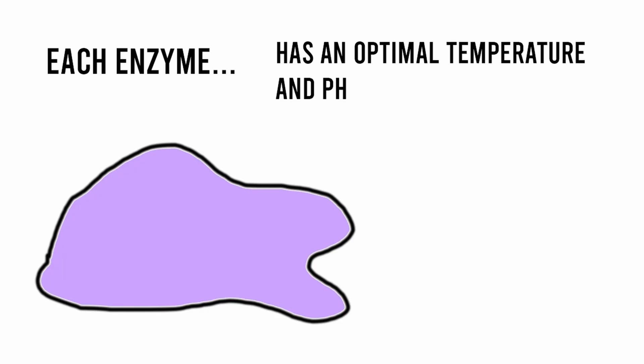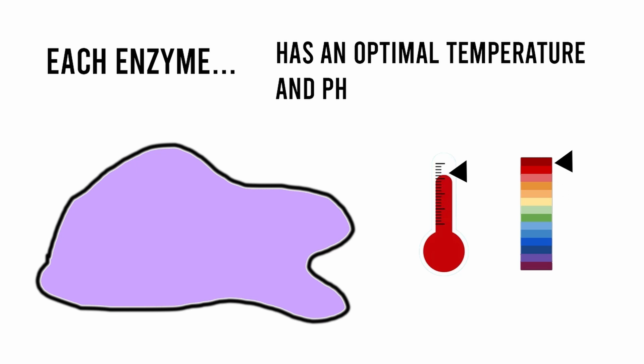Each enzyme has an optimal temperature and pH, which maximizes its function. However, if the conditions are changed, this can cause the 3D protein structure of the enzyme to change due to abnormal levels in temperature and pH, causing it to become denatured and dysfunctional.